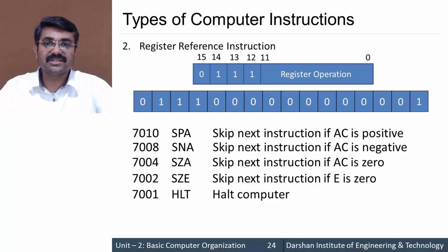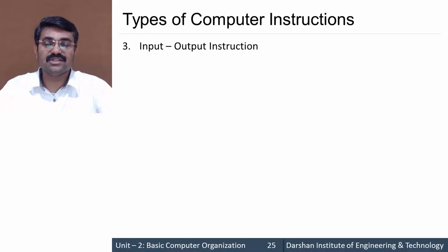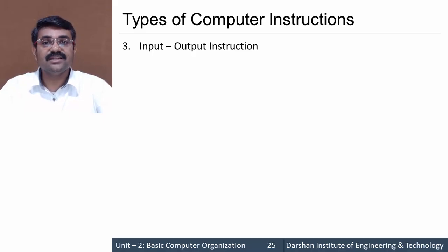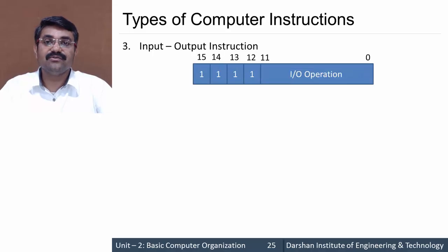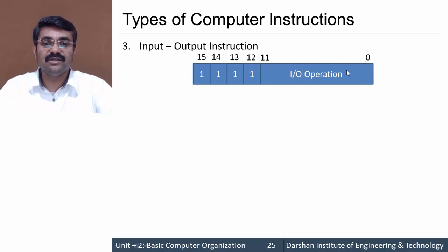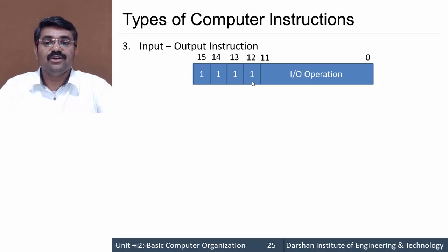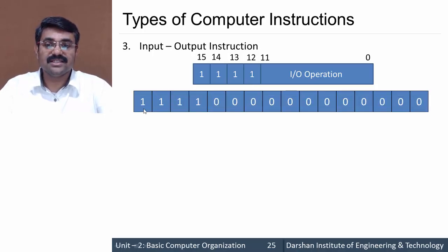The last type of instructions is input/output instructions, which perform operations related to input and output devices. The format specifies that bits 0 to 11 define the I/O operation, while bits 12 to 15 are all fixed as 1111 for all input/output instructions. Only the lower 12 bits change to select the I/O operation.